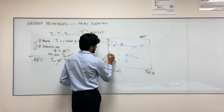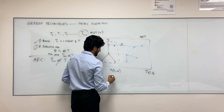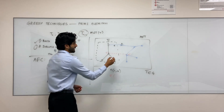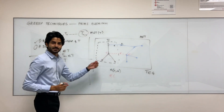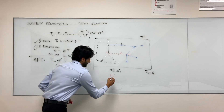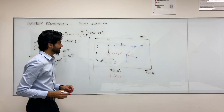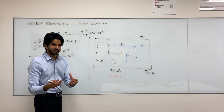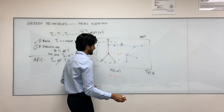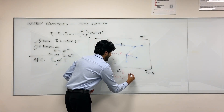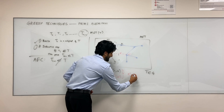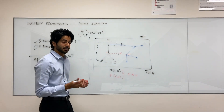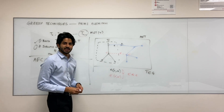Let's say Prim chose some edge E prime, connecting V prime with U prime. Since Prim's algorithm chose the minimum weight edge, it tells us that the weight of edge E prime must be less than or equal to the weight of E — that's the definition of how Prim's algorithm works.